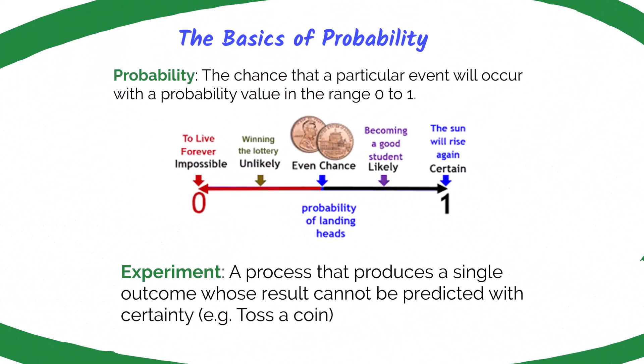Finding the probability of something is to find the chance that a particular event will occur. A probability value will be between the range of zero to one. Zero means it's impossible — something like living forever. One is for certain — something like the sun will rise again. In between, we have unlikely probabilities such as winning the lottery, even probability like heads or tails which is a 50-50 chance, and likely outcomes like becoming a good student if you put in the effort. An experiment is a process to find a single outcome that cannot be predicted with certainty, such as flipping a coin.